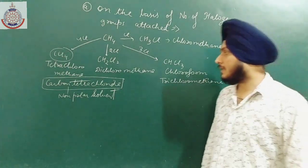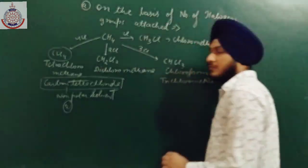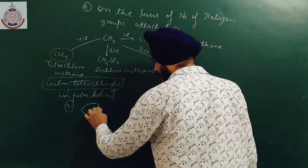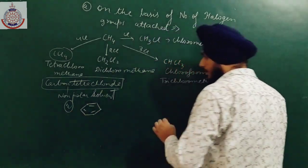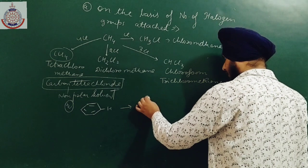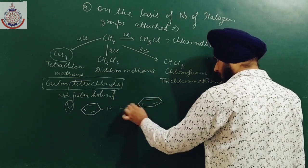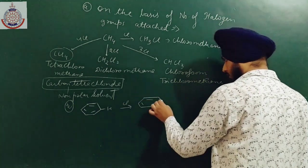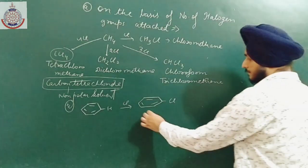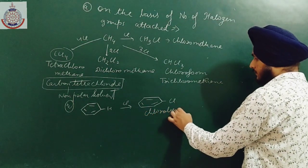Similarly, starting with a benzene ring — if I replace one hydrogen with a chlorine group, we get chlorobenzene.